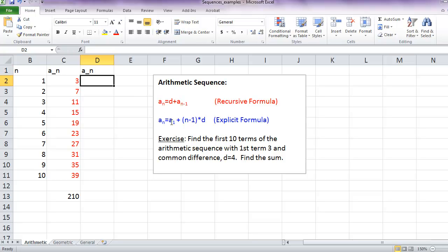For the explicit formula, I'm supposed to take the first cell containing the value, which is 3 in this case, plus n minus 1. So that would be n minus 1 times the common difference, which is 4.